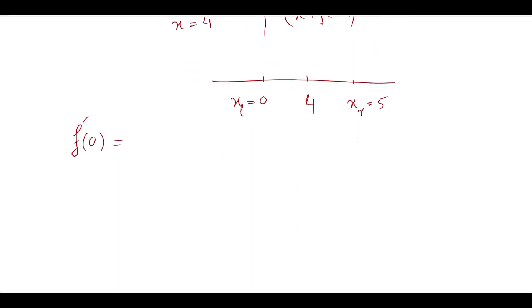When we substitute x = 0, the first derivative was 2x minus 8. So substituting 0, the answer is minus 8, which is less than 0.